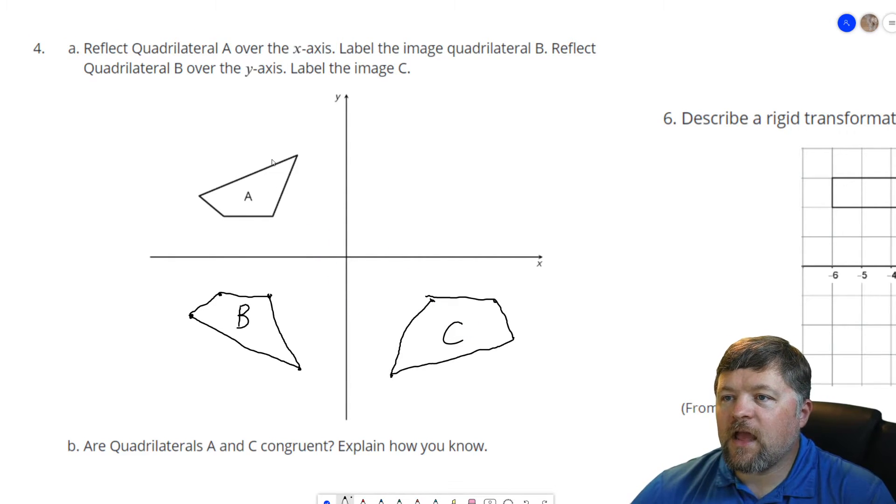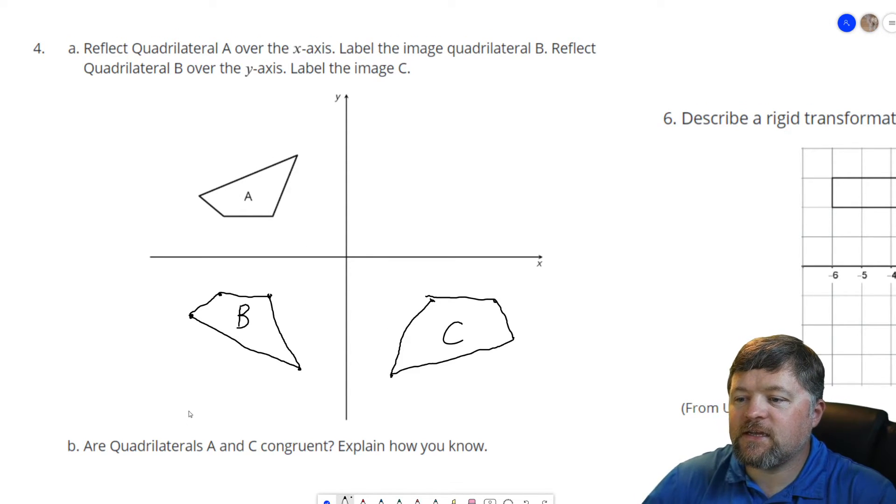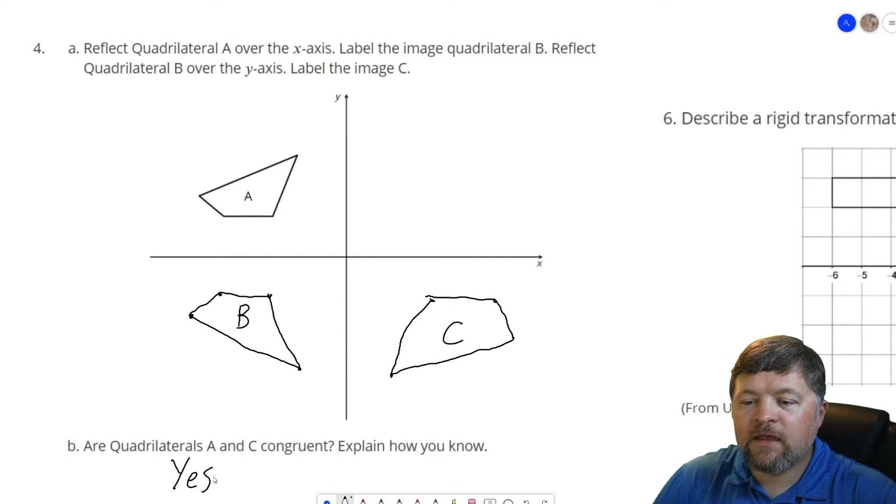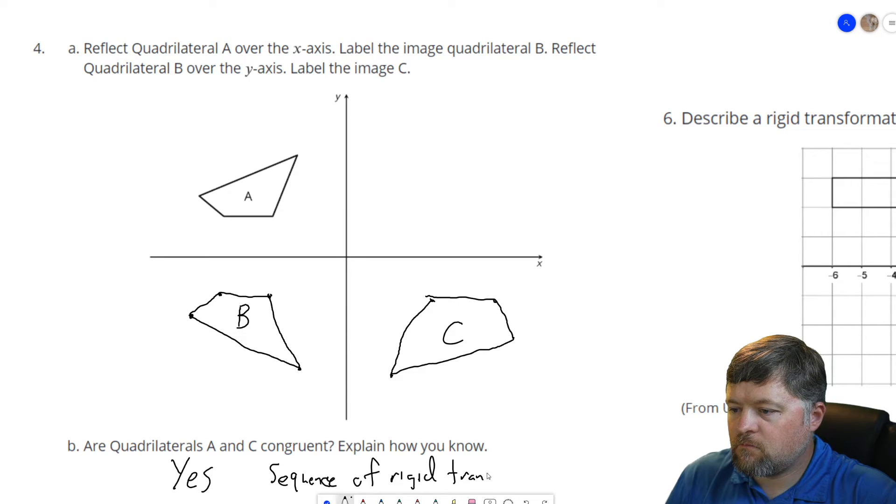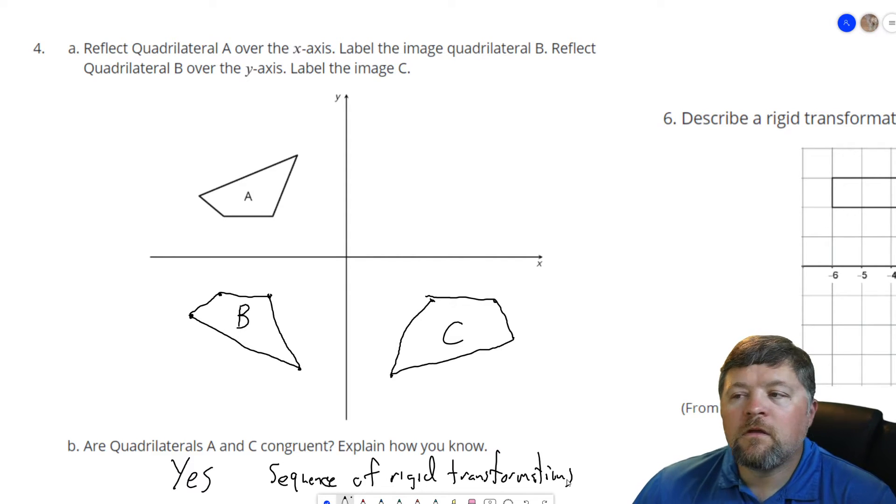So we reflected A over the x-axis got B. Reflected B over the y-axis got C. Are quadrilaterals A and C congruent? Is A congruent to C? Yes. Why? Explain how you know. Because there was a sequence of rigid transformations taking A to C.